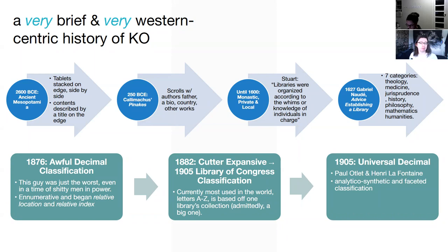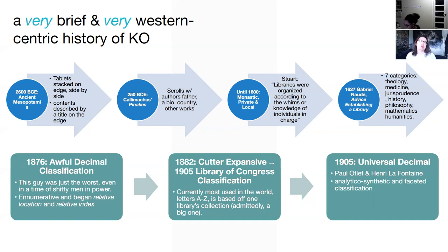Jump a few thousand years ahead and you get scrolls. You're in ancient Greece and Rome — the Library of Alexandria. This was the standard classification system for libraries in the ancient world. These scrolls would have tags on them, or an additional scroll that prefaced all the work, listing the internal contents of the scroll, the author's name, who their father was — because that was important for understanding the work — a biography of the author, their country, and other works. Think of it as the ancient Greek version of Wikipedia, except literally patriarchal.